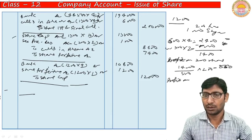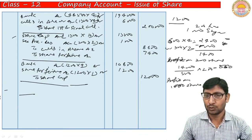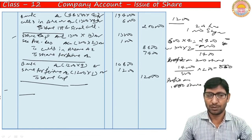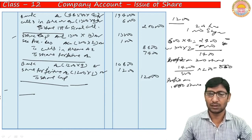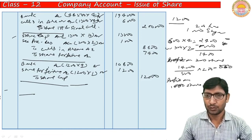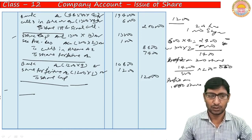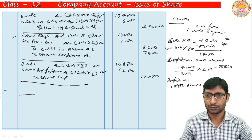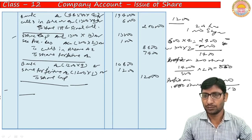For Shyam's 1,000 forfeited shares: since entire forfeited balance is profit (full payment received on application and allotment), the total balance goes to capital reserve = Rs. 6,000. Combined total profit on reissued shares = Rs. 560 + Rs. 6,000 = Rs. 6,560, less loss on reissue Rs. 1,200, net capital reserve = Rs. 5,360.